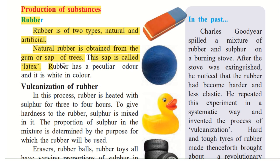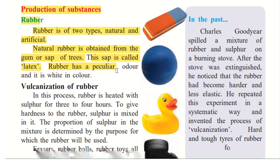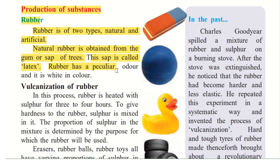The rubber has a peculiar odour. Peculiar means a very different kind of — which we can say for rubber only. So it is a different odour. Odour is smell, and it is white in colour. That is what is about natural rubber.